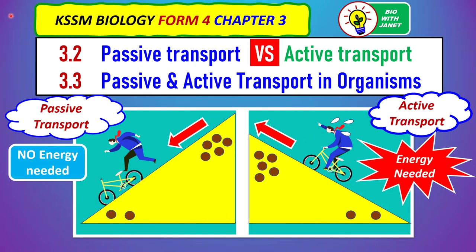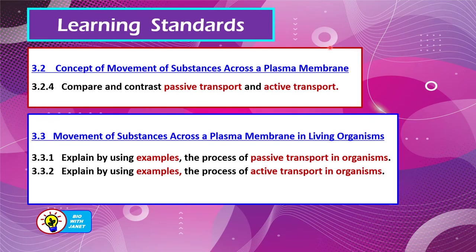Let's carry on and find out more about the differences between passive and active transport. The learning standards for today's lesson are: 3.2 — compare and contrast passive transport and active transport. And for subtopic 3.3, movement of substances across a plasma membrane in living organisms — we must be able to explain by using examples the process of passive transport in organisms, and explain by using examples the process of active transport in organisms.